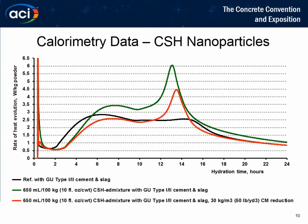We can also see this in the calorimetry data across multiple mixes. The black line is a reference mix — a Type I/II cement with a 25% slag replacement. The green line shows the use of CSH nanoparticles on top, providing increased Portland cement strength throughout. What we see in the calorimetry data is a second bump with the use of these CSH nanoparticles. The red line represents a reduction of 50 pounds per cubic yard (30 kg/m³) of total cementitious material, again achieving equivalent or better strength development while also showing that second calorimetry bump.